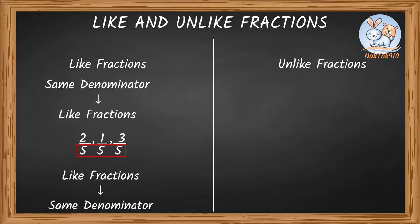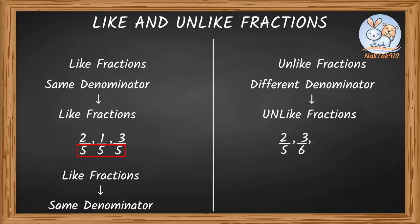Now can you guess what are unlike fractions? Hmm, maybe different bottom numbers. Yep, different denominators are unlike fractions. Tell me some examples now. 2 by 5, 3 by 6, 1 by 7 are unlike fractions, because they have different bottom numbers.